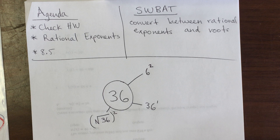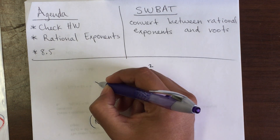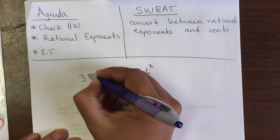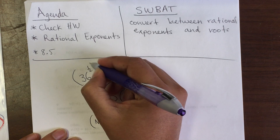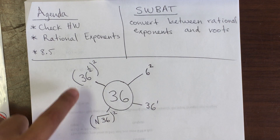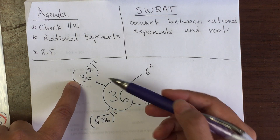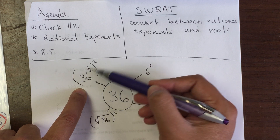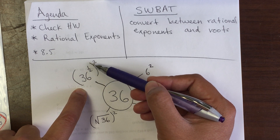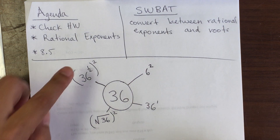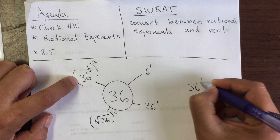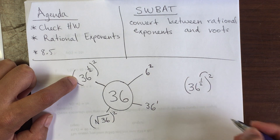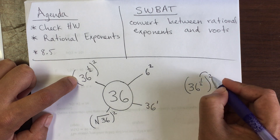Now one that we might not think of — and it's going to be a little more difficult to make the connection — is 36 to the one half, all raised to the second power. If you recall from the previous lesson, when we have an exponent inside and an exponent outside of parentheses, it's a power raised to another power and we multiply them. So we keep the base and multiply 2 times one half.